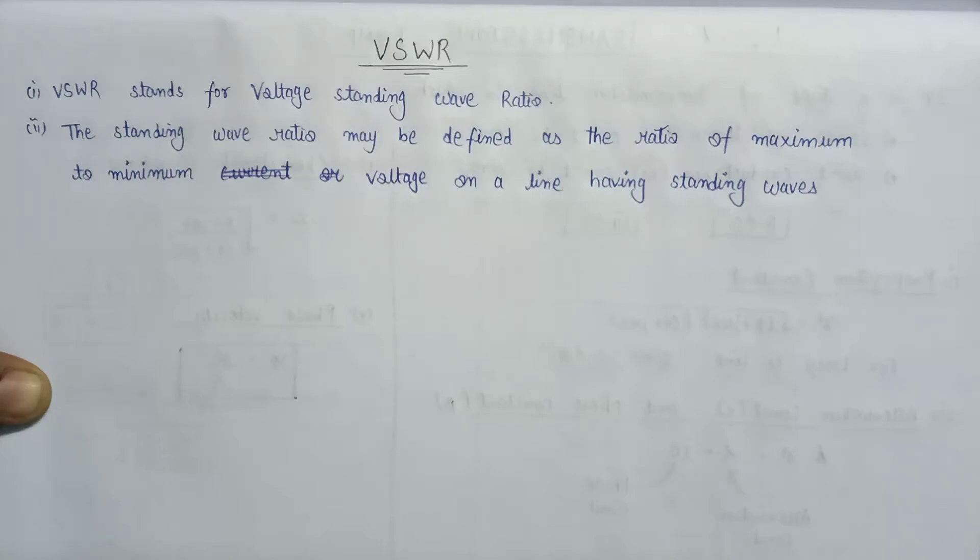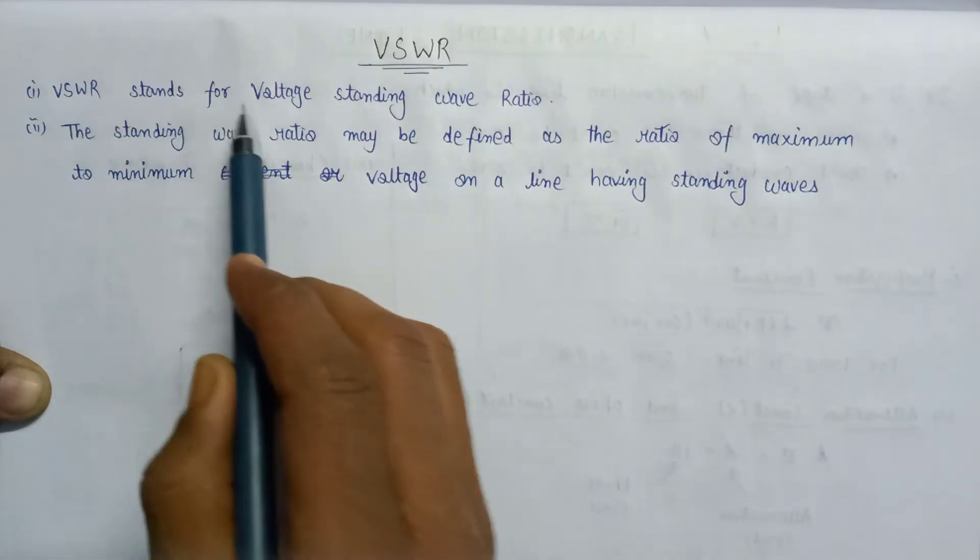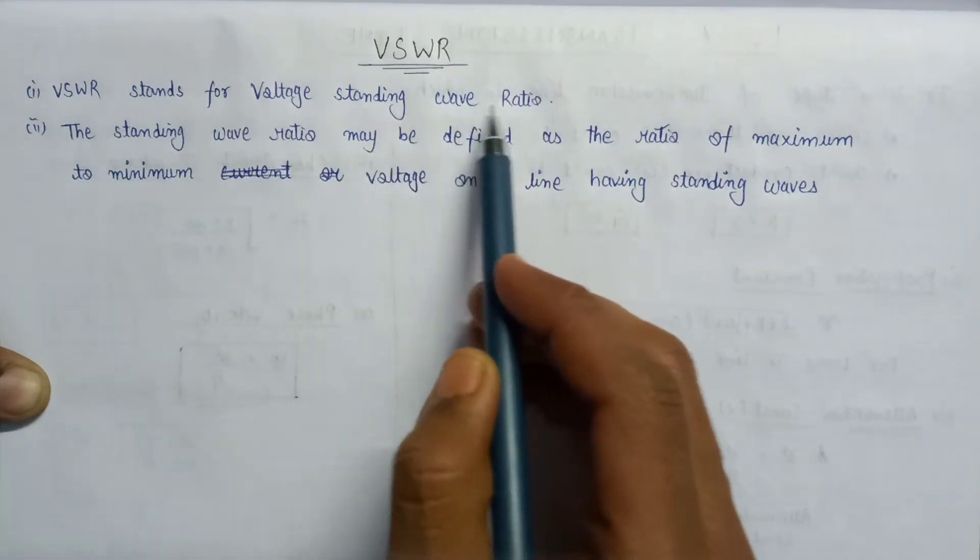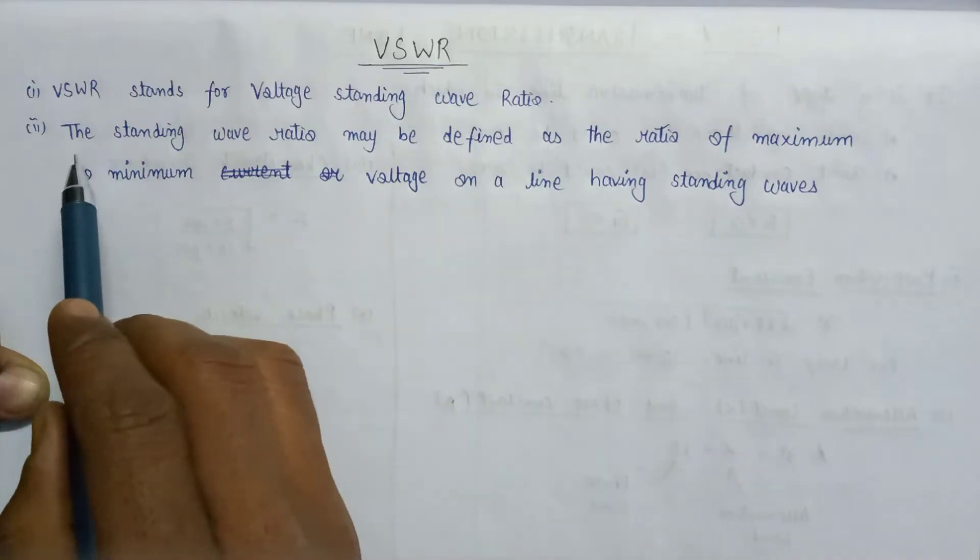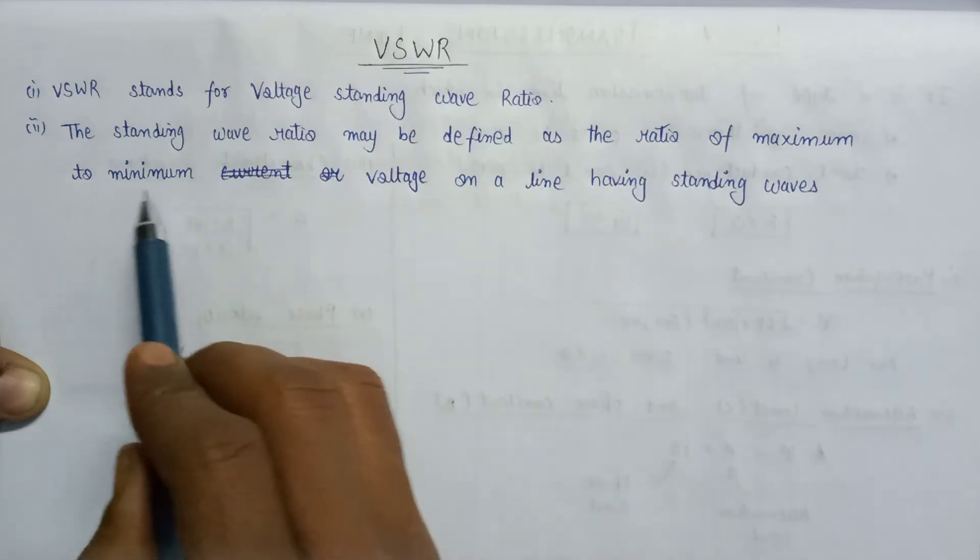Welcome all. In this lecture, we are going to learn about VSWR. VSWR stands for voltage standing wave ratio. The standing wave ratio may be defined as the ratio of maximum to minimum voltage on the line having standing waves.